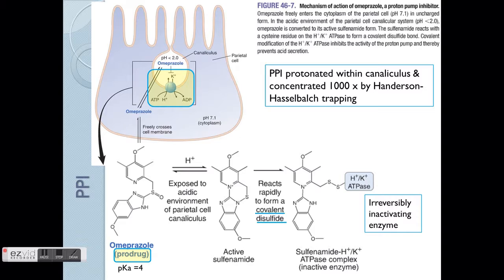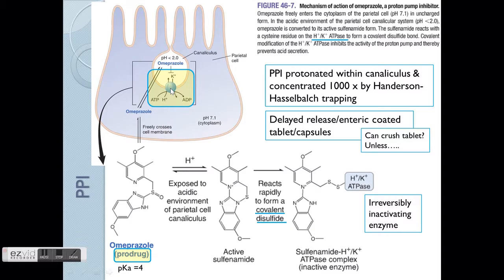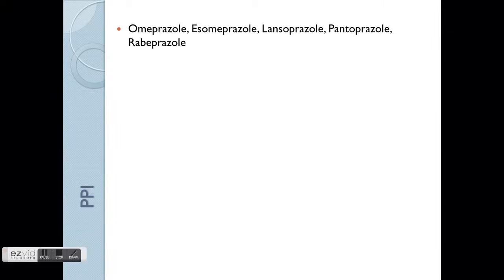It forms this stable irreversible bond. Therefore, the action of PPI is slightly longer because of this covalent bond. PPI is commonly found in delayed or enteric-coated form because the drug needs to enter the cells first and be trapped specifically at the canaliculus where it becomes protonated. However, bear in mind that the stomach lumen itself is at a similar pH, so you want to protect the drug so that it gets protonated specifically at the site of action. So — can you crush these tablets? Have a think about it.